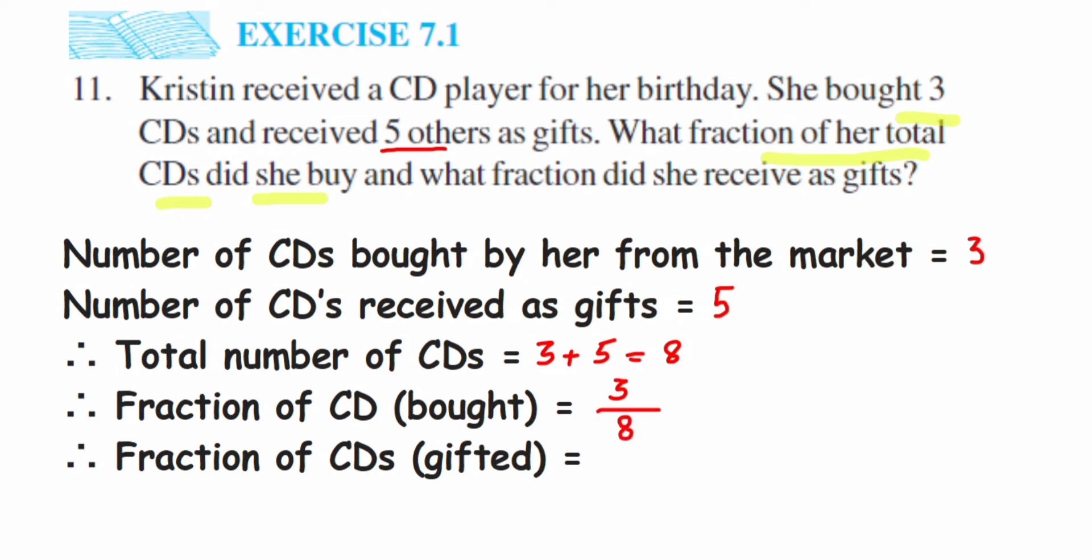Similarly, they're asking what fraction did she receive as a gift. So again, total CDs she has is 8. Out of this 8, how many she got as a gift? 5. So the fraction becomes 5 by 8.